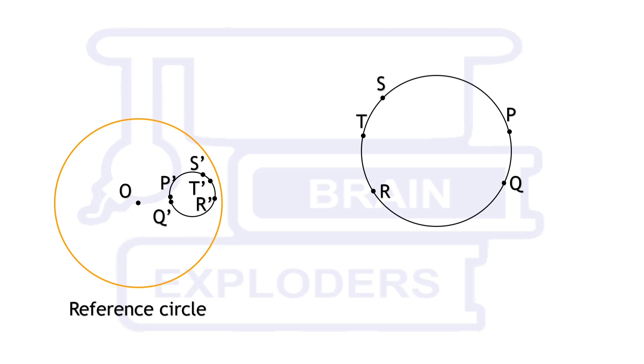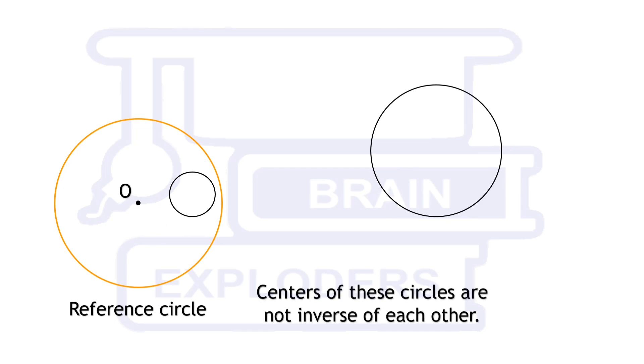For example, inverse of parabola is not a parabola. Centres of these inverse circles are not inverse of each other and inverse of two concyclic circles are not necessarily concyclic.